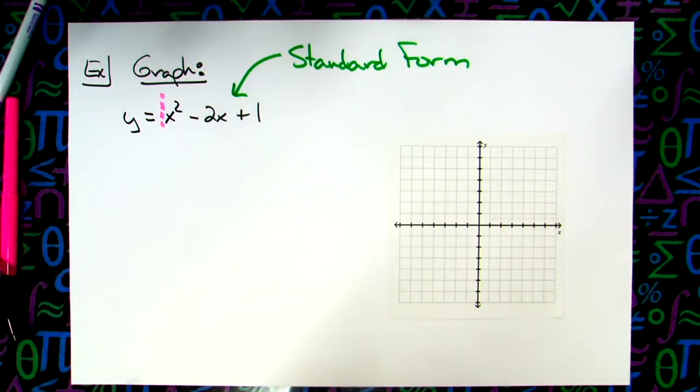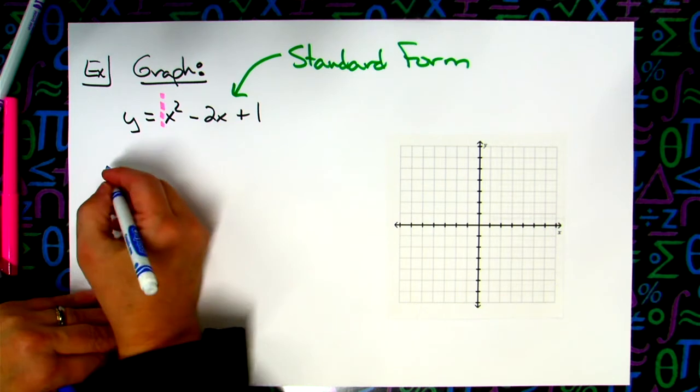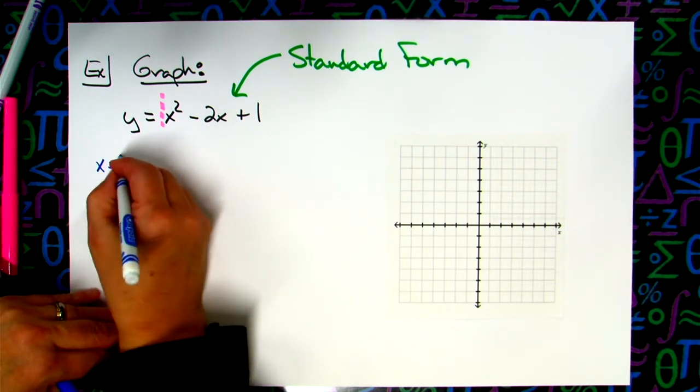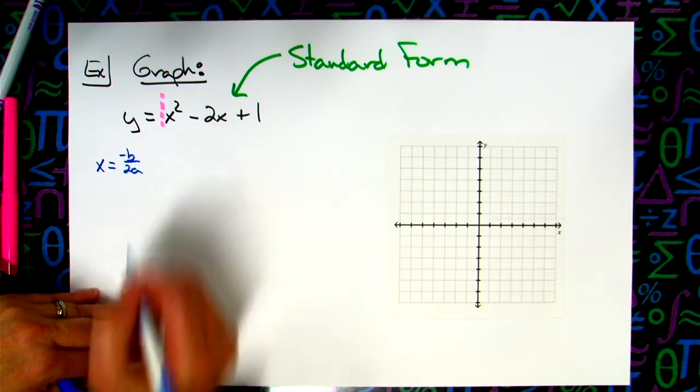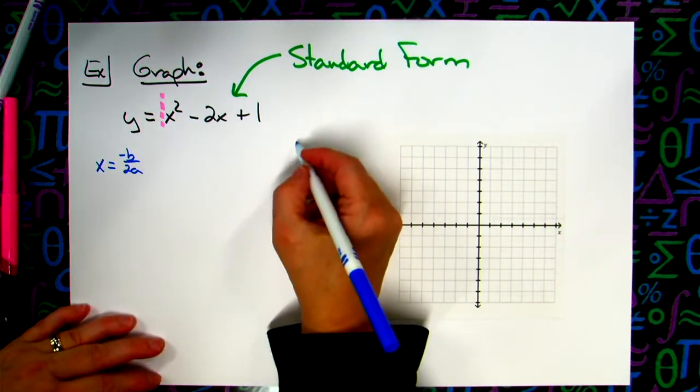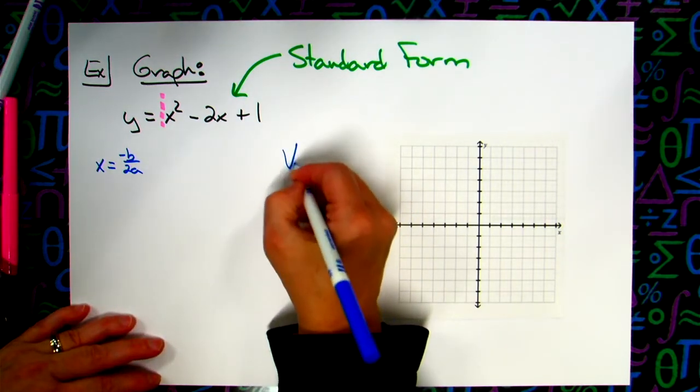Now, does anybody remember the formula for finding the vertex in standard form? We got all these formulas floating around. If I said it starts with a negative, yes, excellent, negative b over 2a. So that's the thing you got to remember. Now, I'm going to add an extra part to that. Technically, it's x equals negative b over 2a because you're finding the x coordinate of the vertex. So that's what I'm trying to calculate here. I'm trying to find my vertex.